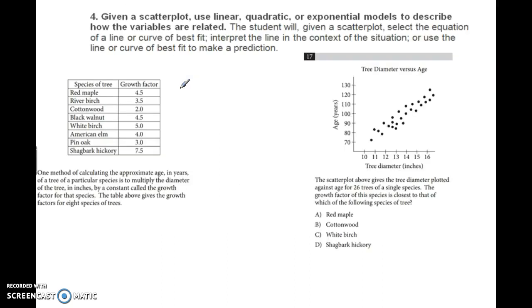Another type of problem involves linear, quadratic, and exponential models describing different situations. This scatterplot shows tree diameter plotted against age. The question asks which species has the closest growth factor. I might find a point on the line of best fit. That point looks to be about (12.5, 90). The diameter is 12.5 and the age is 90. Remember, the formula said age equals diameter times the growth factor.